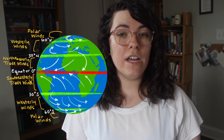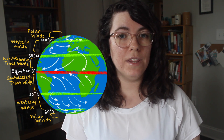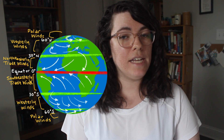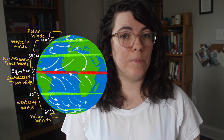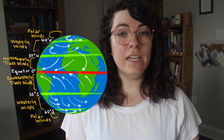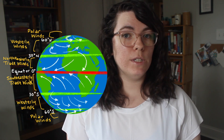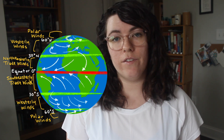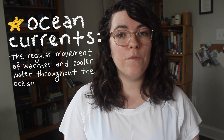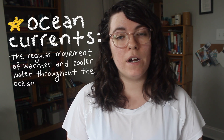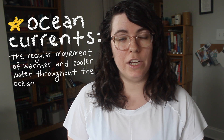Then, starting at about 30 degrees north latitude and 30 degrees south latitude, the prevailing winds flow west and toward the poles. These wind patterns are largely responsible for seasonal weather events like hurricanes and blizzards. There is a similar movement of warmer and cooler water in the ocean, which we call ocean currents. Ocean currents also influence the weather and climate of the planet.